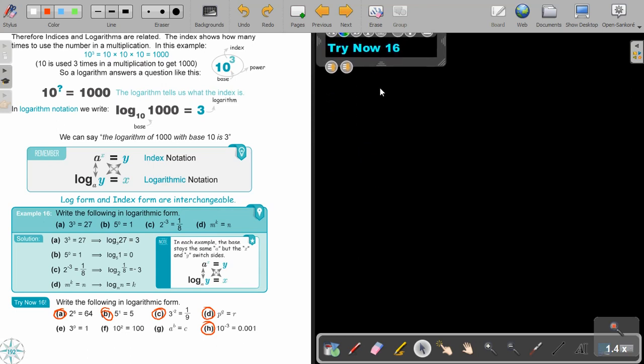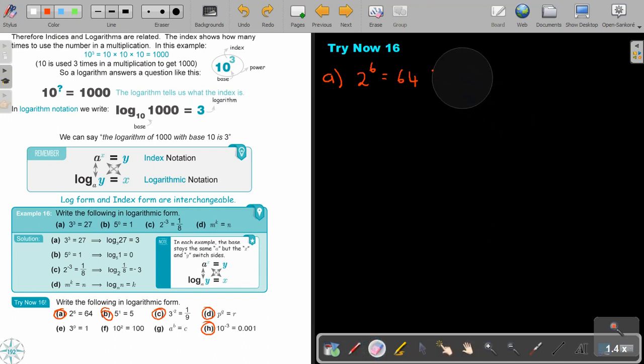Let's start. I'm first going to write it as it stands there. 2 to the power of 6 equals 64. That will become log, keep the base, just move it down and swap. 64 is equal to 6.